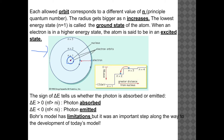Depending on the energy change, we can tell whether a photon is absorbed or emitted. If delta E is greater than zero, energy is going in — a photon is being absorbed — which allows an electron to jump up in energy levels and become excited. When delta E is less than zero, a photon is being emitted, and the electron falls back down to its ground state or a lower energy state.